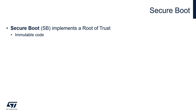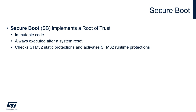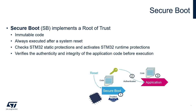The first service provided by the TFM package is secure boot, which implements the system root of trust. It is an immutable code, always executed after system reset. It is responsible for checking the status of STM32 static protections and for enabling STM32 runtime protections in order to protect sensitive data and operations. As with any secure bootloader, it verifies the authenticity and integrity of the application code before executing it. Integrity is verified to ensure the image has not been corrupted or maliciously modified, while authenticity checks verify that the firmware image is coming from a trusted and known source, to prevent unauthorized entities from installing and executing code. Starting from this trusted component, every other component is then authenticated before its execution.